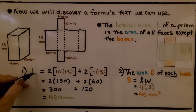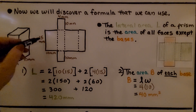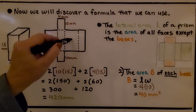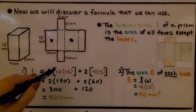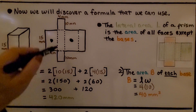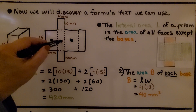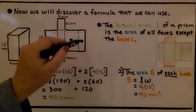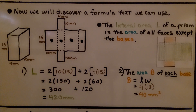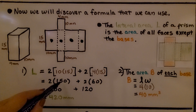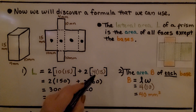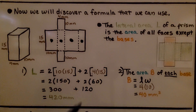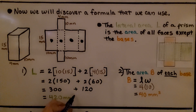The lateral area is equal to: two times ten times fifteen for the two large rectangular faces, plus two times four times fifteen for the two smaller rectangular faces. Ten times fifteen is one hundred fifty, so two times one hundred fifty is three hundred. Four times fifteen is sixty, so two times sixty is one hundred twenty. The lateral area is three hundred plus one hundred twenty, which is 420 millimeters squared.